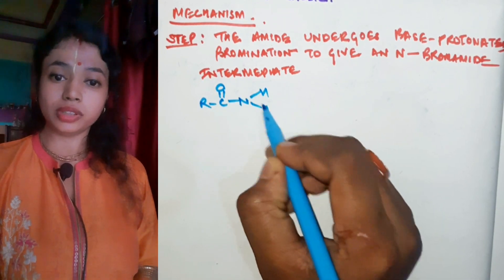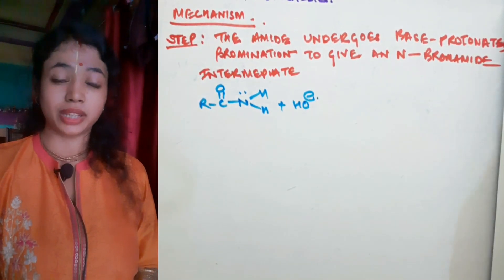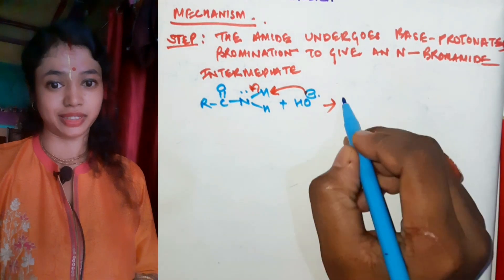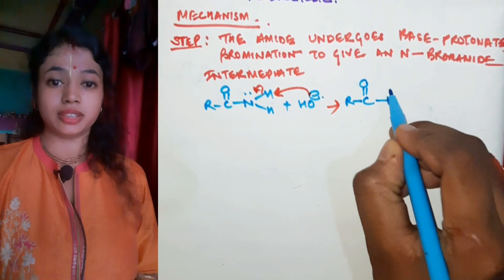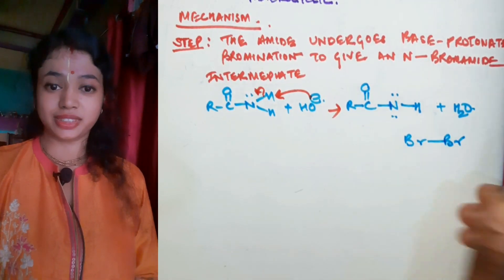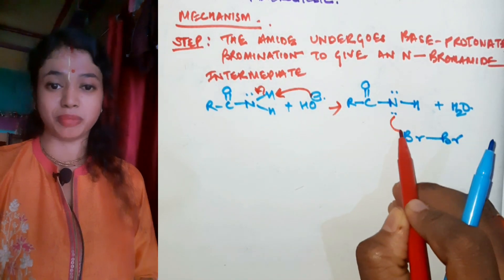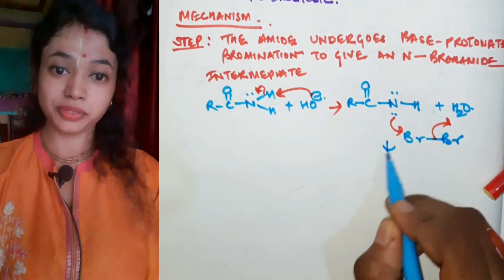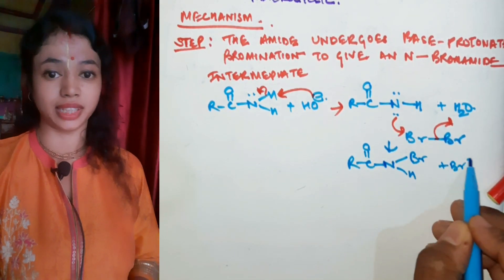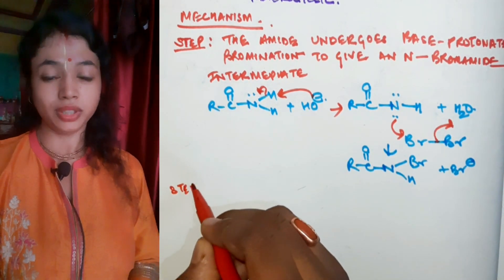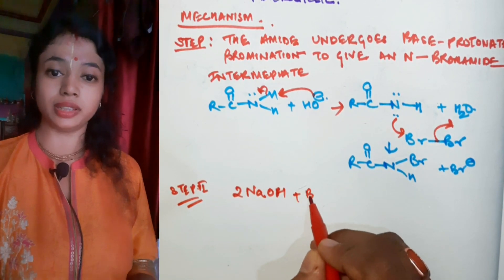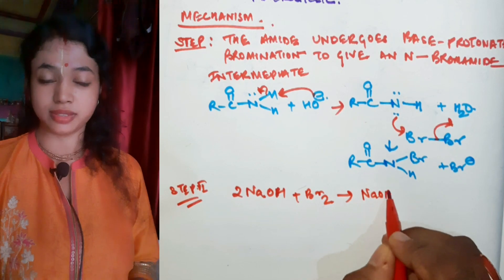In step one of the mechanism, the amide undergoes a base-promoted reaction to give an N-bromide intermediate. The hydroxide ion (OH⁻) from NaOH takes up a proton from the amide. The lone pair on nitrogen then attacks bromine, breaking the Br-Br bond heterolytically — Br⁻ leaves and Br⁺ adds to nitrogen — forming the N-bromide intermediate.